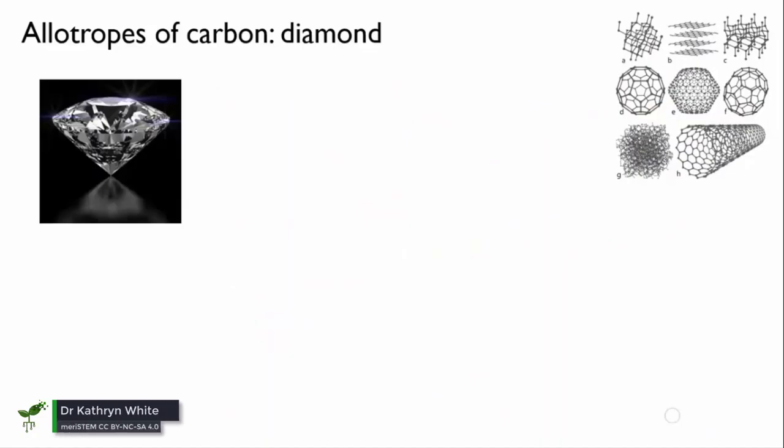First of all, diamond. In diamond, each carbon atom forms single bonds to four other carbon atoms, and the four bonds are arranged in a tetrahedral geometry.